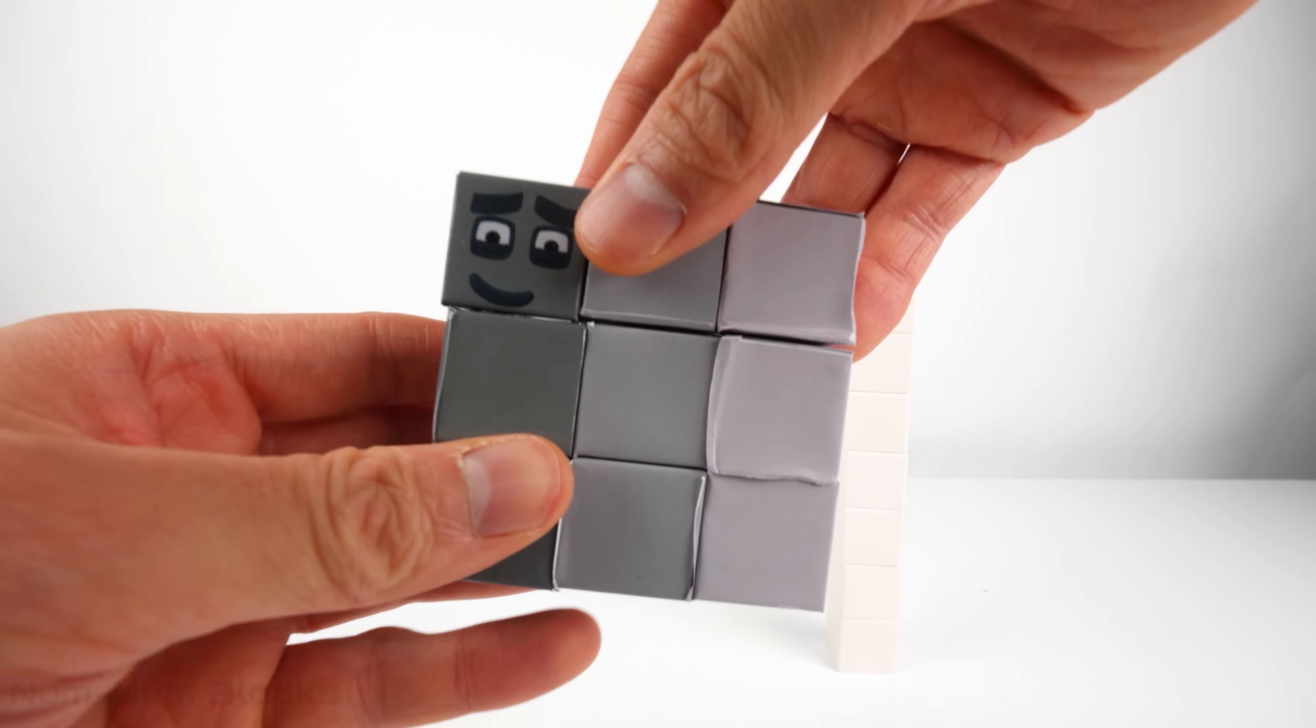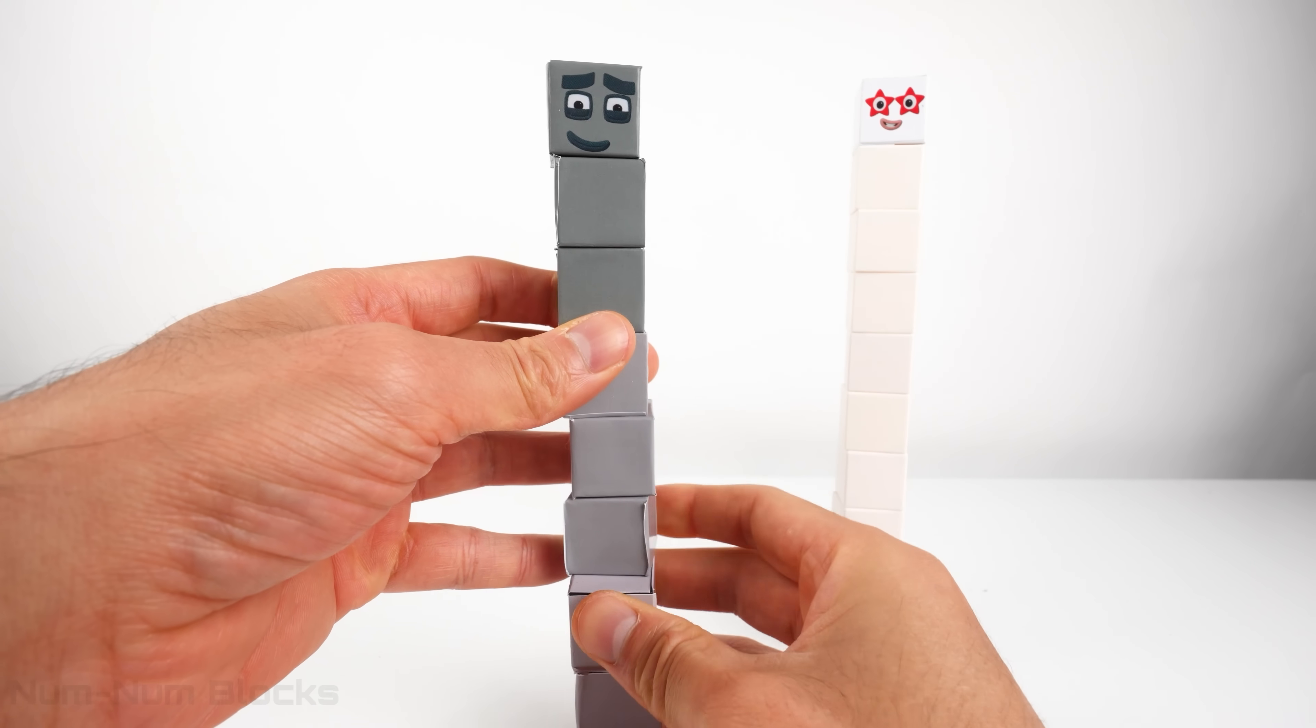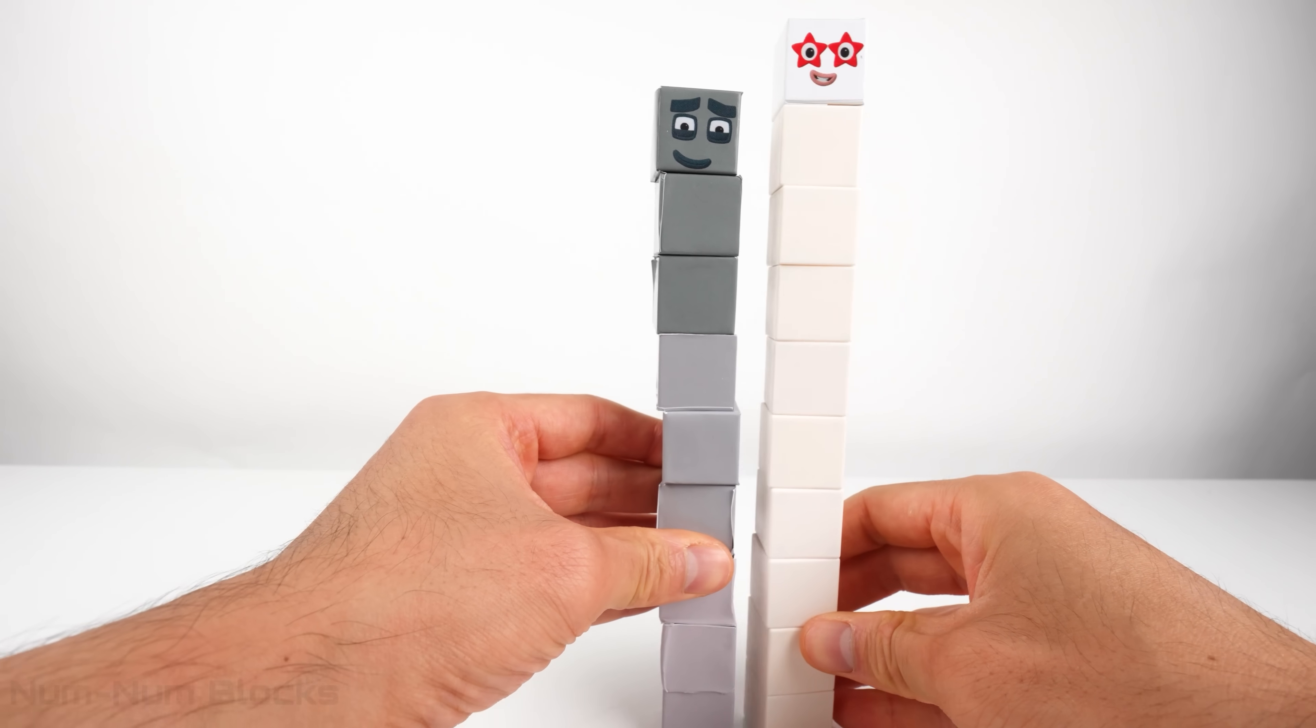Let's make nine stand tall. Nine is made of three lots of three. Each lot is a different shade of gray.